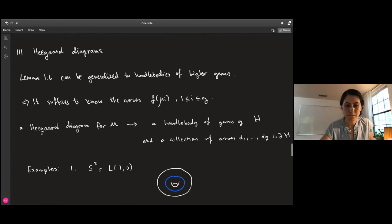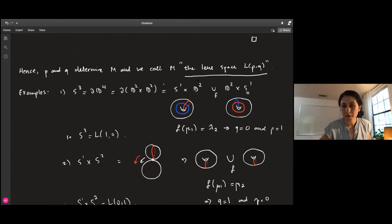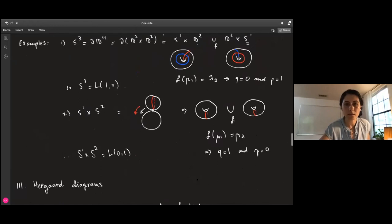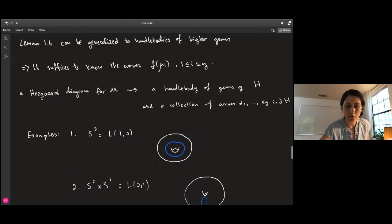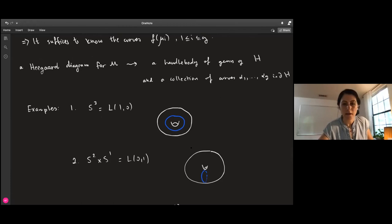If we go back to our easy examples, the meridian is mapped to the longitude, so the Heegaard diagram for S³ is basically just this. Similarly, for the second example, the meridian is mapped to the meridian, so the Heegaard diagram for S² × S¹ is just going to be like this. These pictures are enough to describe any three-manifold. I have one random Heegaard diagram - it can also be like this.